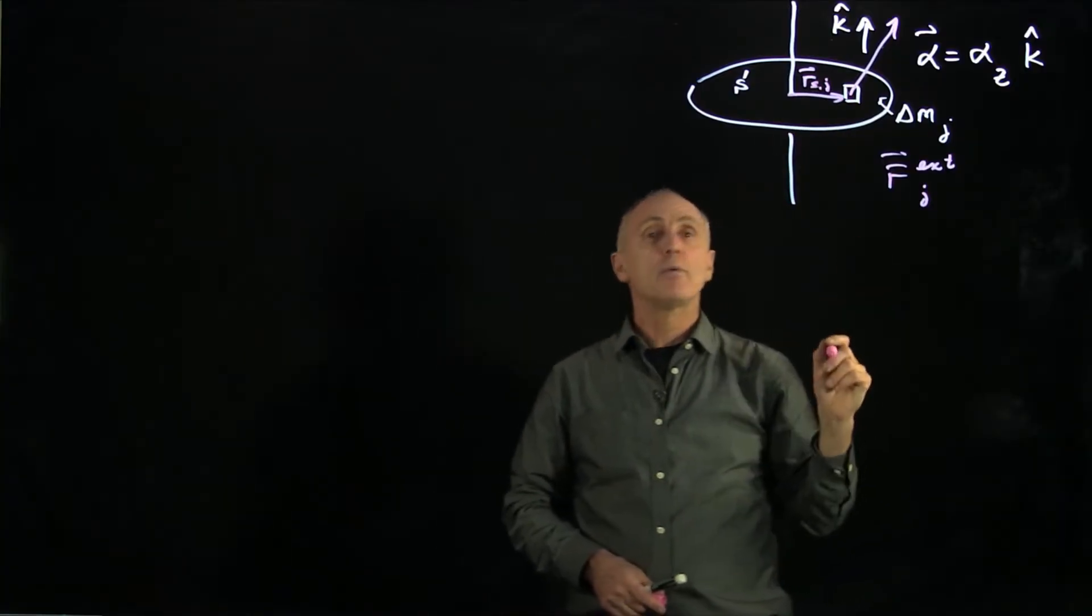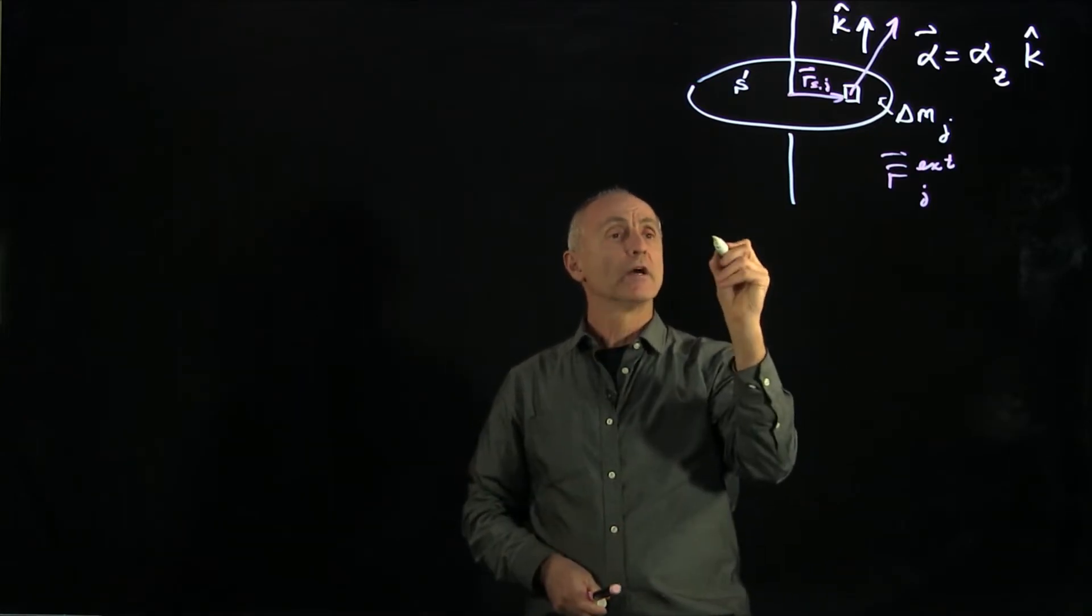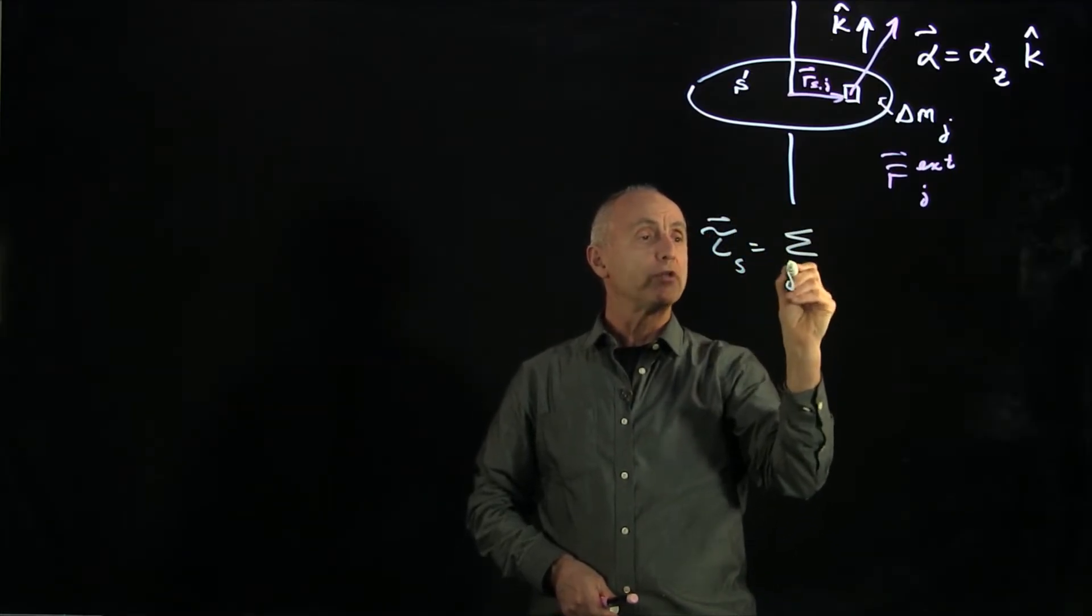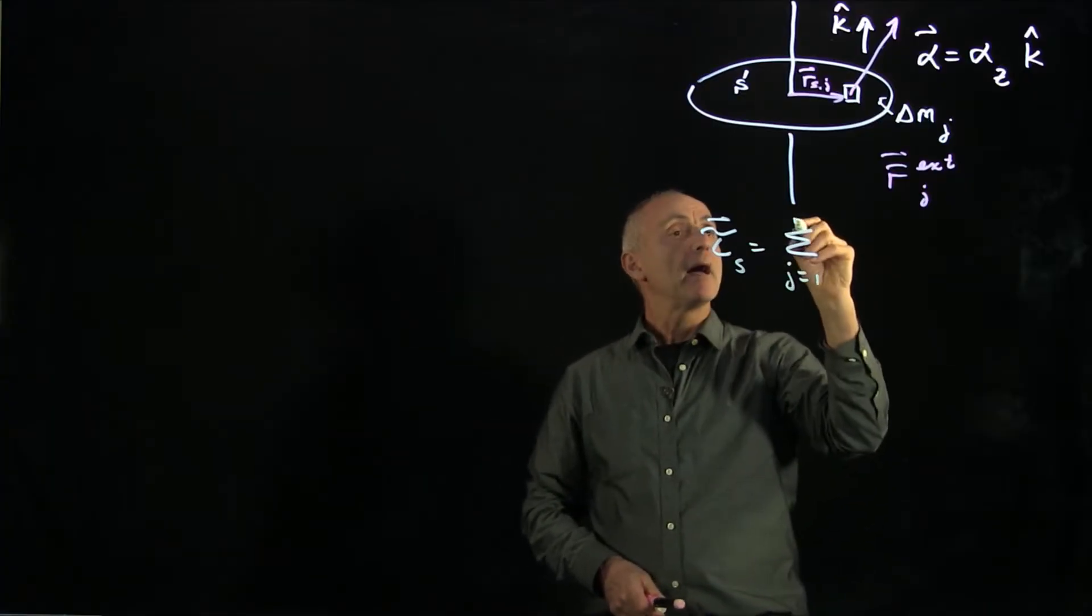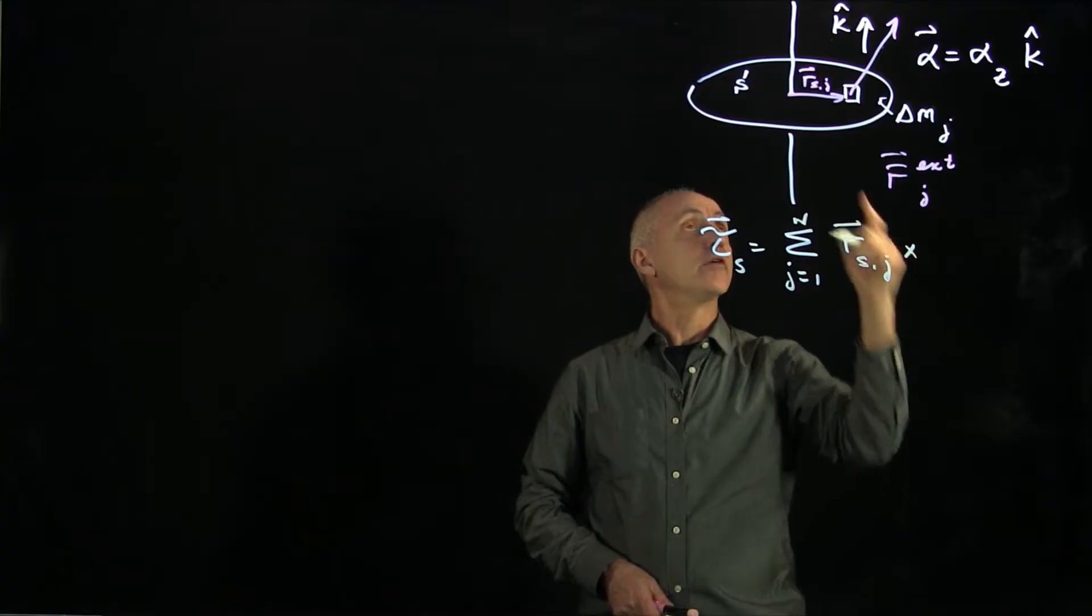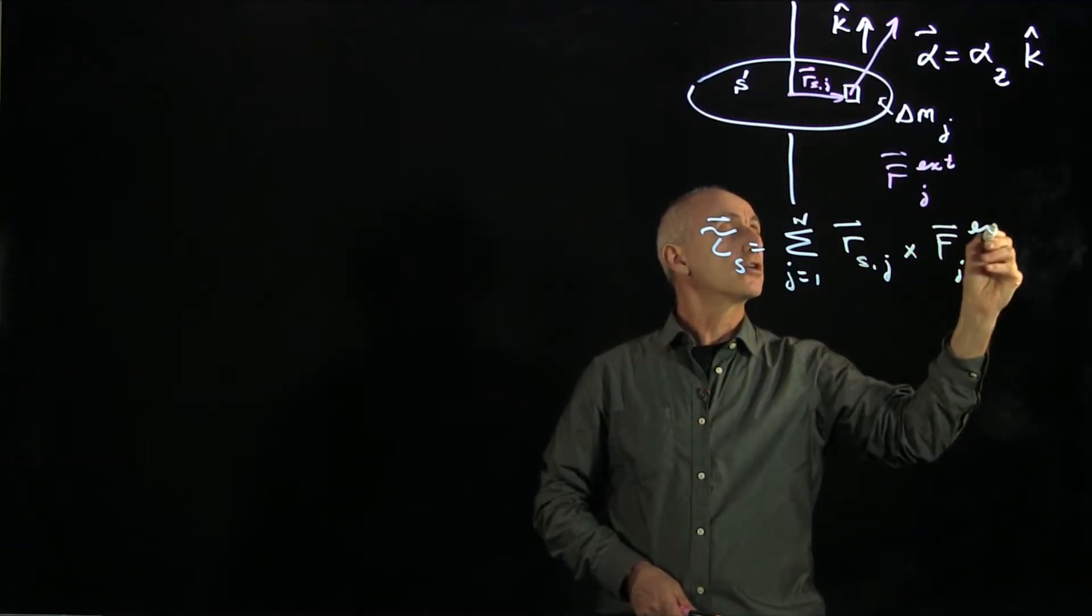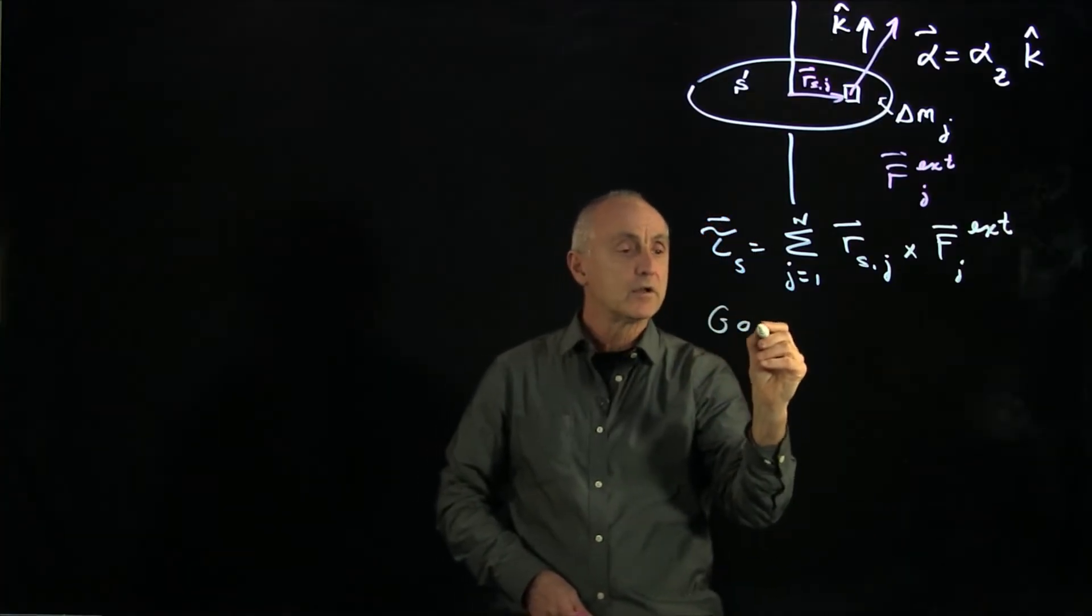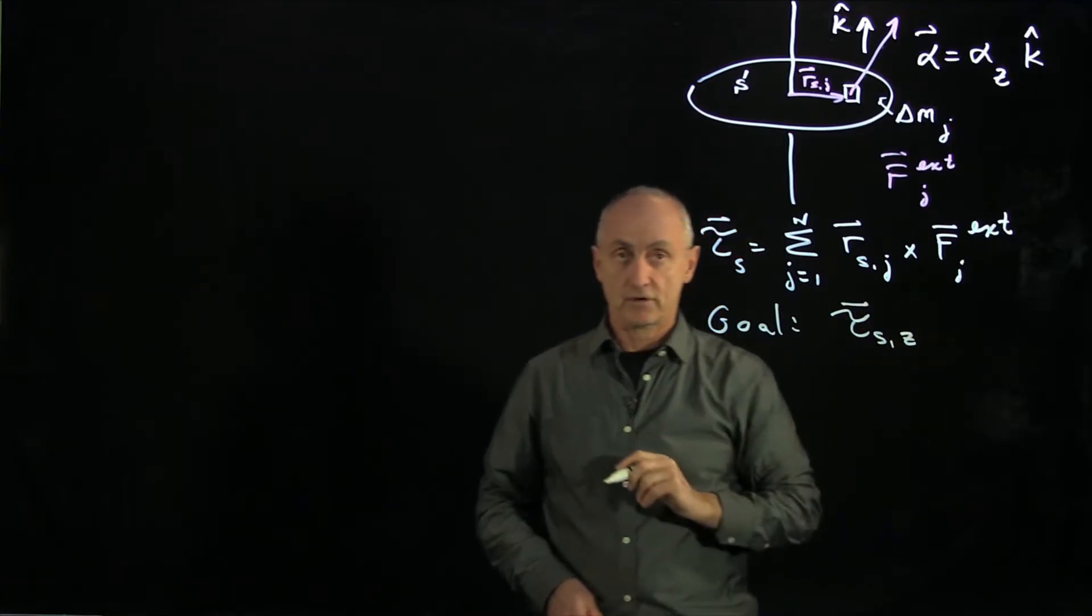And now what we'd like to do is calculate the torque. In general, torque is given by the expression. We'll sum over all the elements. j goes from 1 to n. And it's the vector cross product of r_sj cross f_j external. Now, our goal here is only to calculate the z component of the torque.